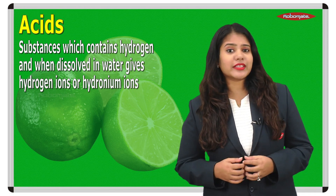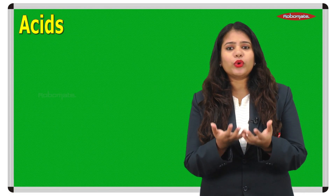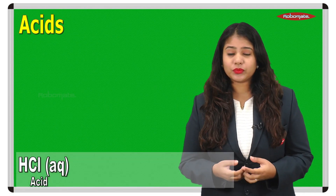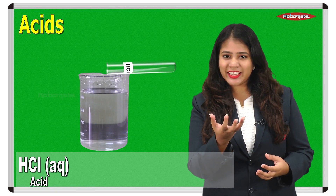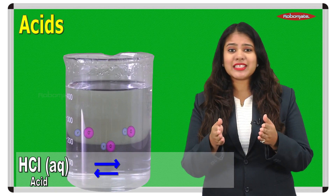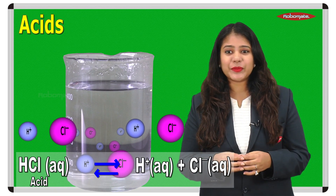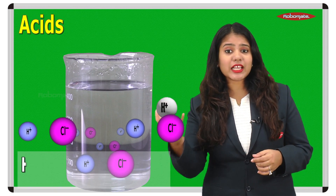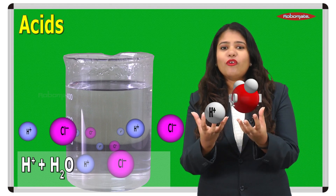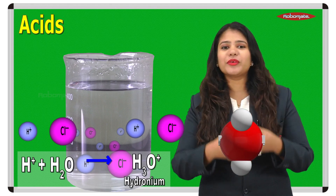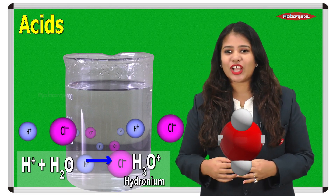Let us try to understand this using an example. Let us take a molecule of hydrochloric acid. When we put a molecule of HCl in water, it splits up into H⁺ and Cl⁻ ions. These H⁺ ions, when combined with water, form hydronium ions as the only positively charged ions.